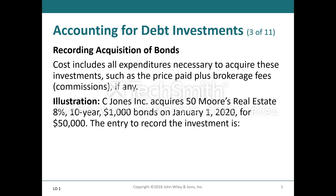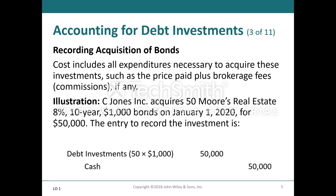As an illustration, C Jones Incorporated acquires 50 of Moore's Real Estate 8%, 10-year $1,000 bonds on January 1st, 2020 for $50,000. The entry to record the investment is a debit to debt investments of $50,000 and a credit to cash for $50,000. This is the entry for C Jones to put the purchase of the debt on his books.